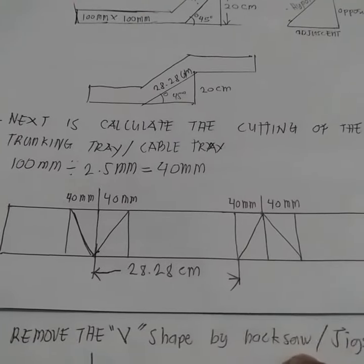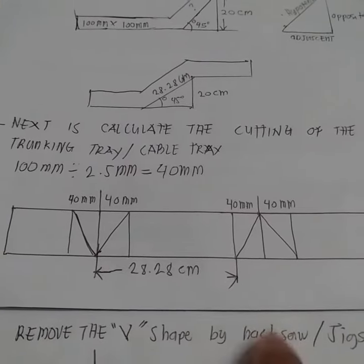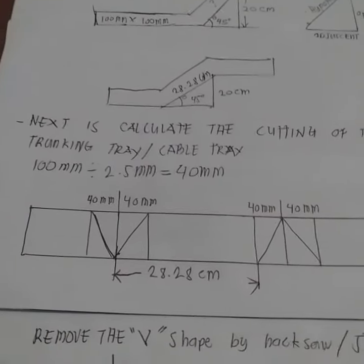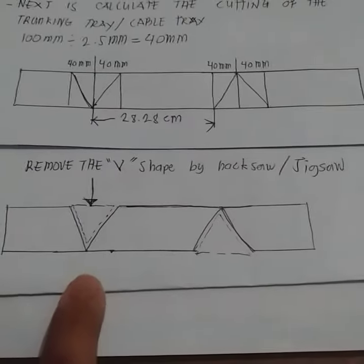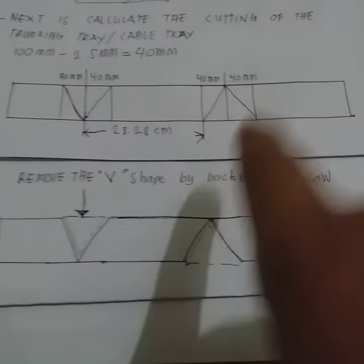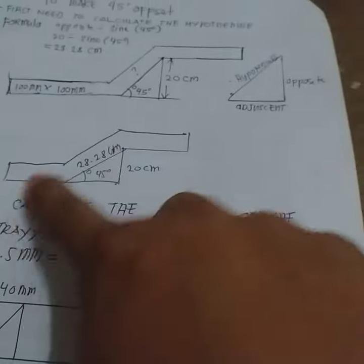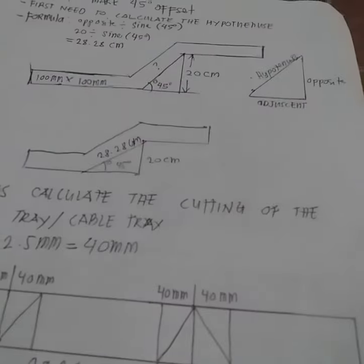We usually need this for galvanized type and for this perforated type also. So now you can remove the V shape, this one, this one, and you will bend and the outcome will be like this. Thank you guys.